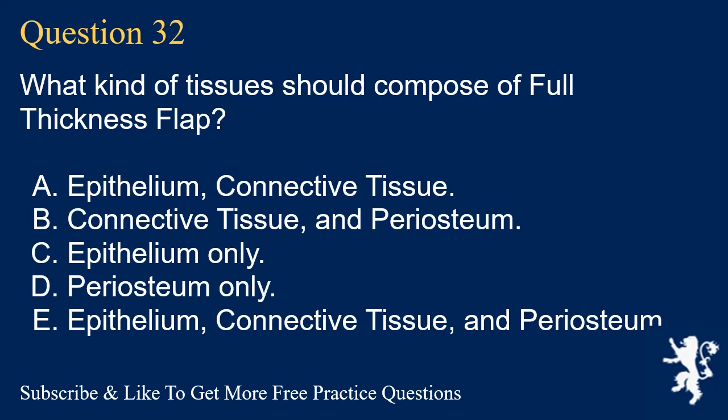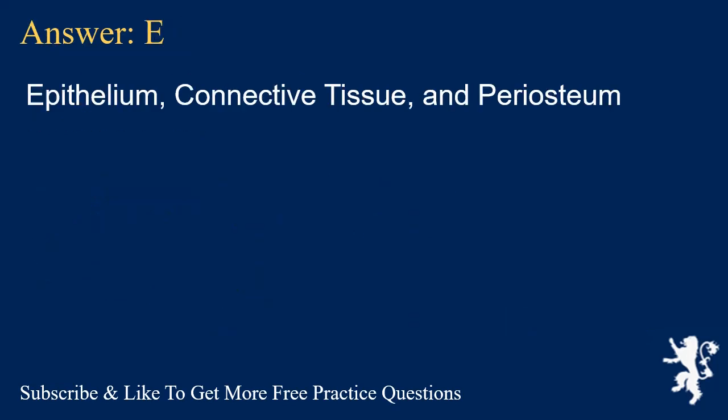Question 32. What kind of tissues should compose a full thickness flap? A. Epithelium and connective tissue. B. Connective tissue and periosteum. C. Epithelium only. D. Periosteum only. E. Epithelium, connective tissue, and periosteum. Answer: E. Epithelium, connective tissue, and periosteum.